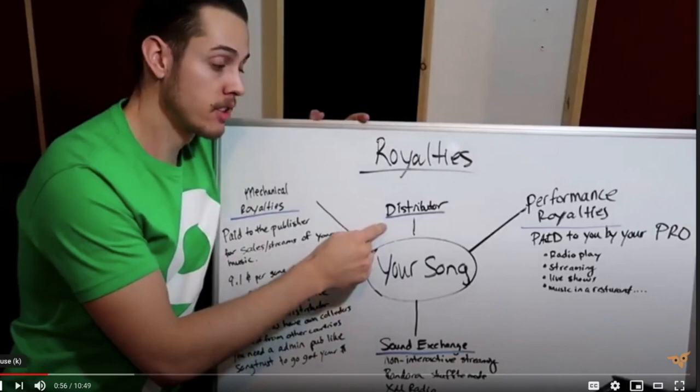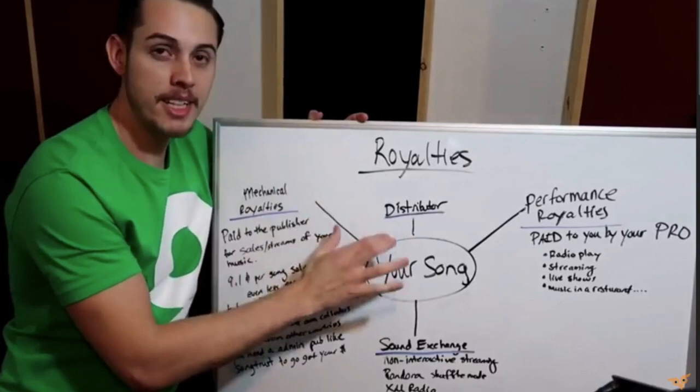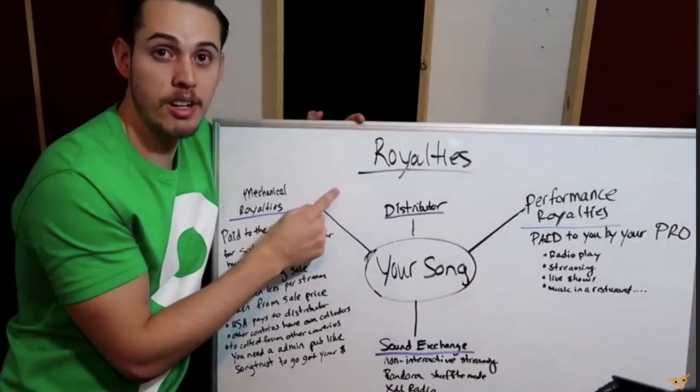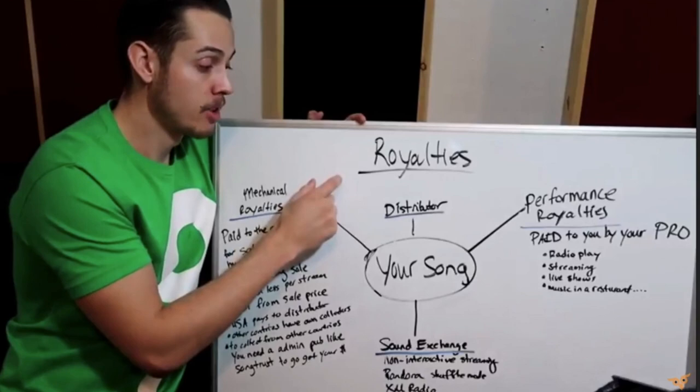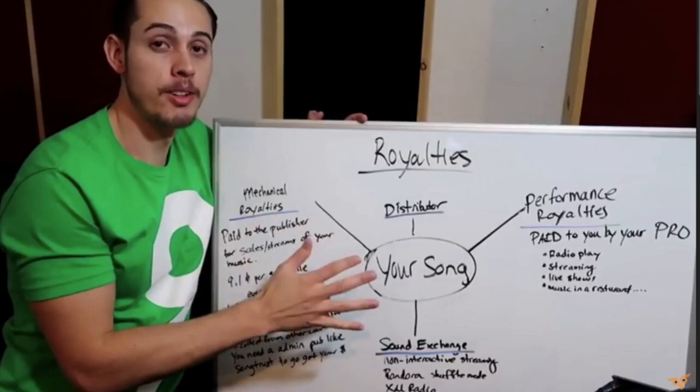I want to show a video about collecting royalties. There are people of all different levels here — some of you have already released music, some of you haven't. Here's our distributor — they get your music out onto those platforms. The most basic way of thinking about how you make money is: your distributor puts a song on Spotify and iTunes, somebody streams or buys it, and that money goes to your distributor and then to you. But there's more to it than just that.